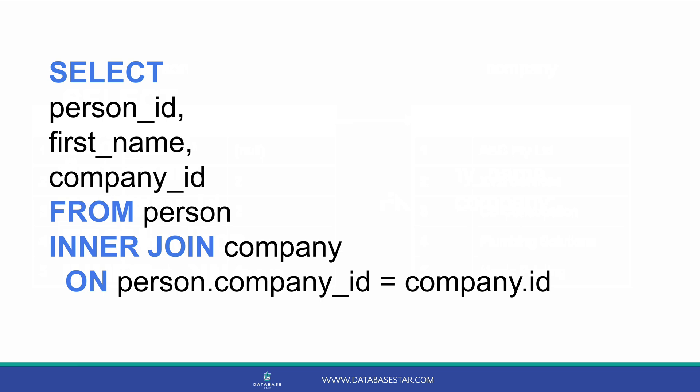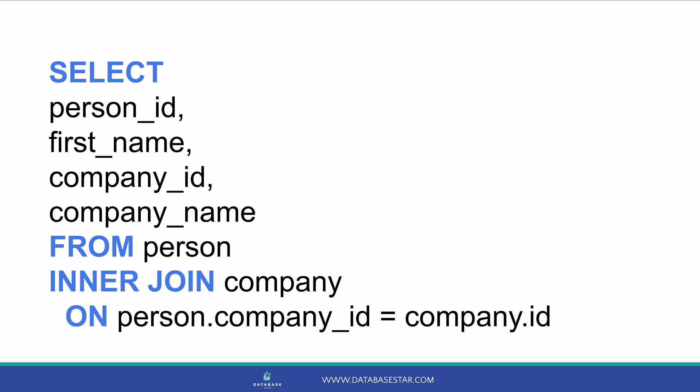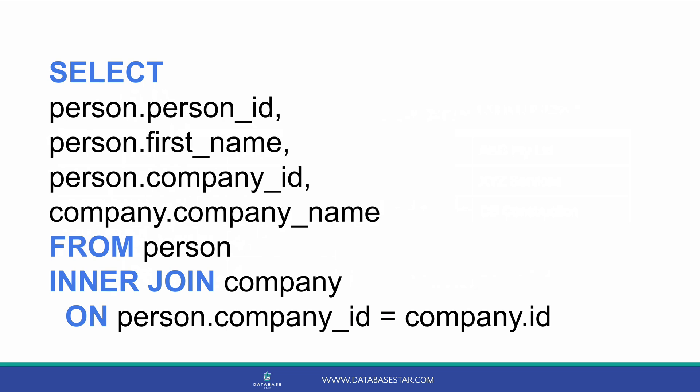This means that the company ID in the person table needs to match the ID in the company table. If it does, the records are related. Now we've joined the tables, we can update what data we want to see. We go back to our select clause and add in more columns — we'll add in the company name. There may be one more thing you want to do before running it: specify the table name for each column in the select clause. This way it's clear which table the columns come from, which is helpful if fields have the same name in different tables.